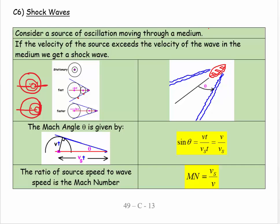Consider a source of oscillation moving through a medium. If the velocity of the source exceeds the velocity of the wave in the medium we get a shock wave. All that energy that normally you'd hear as a hum builds up and you hear it all at once as a bang.